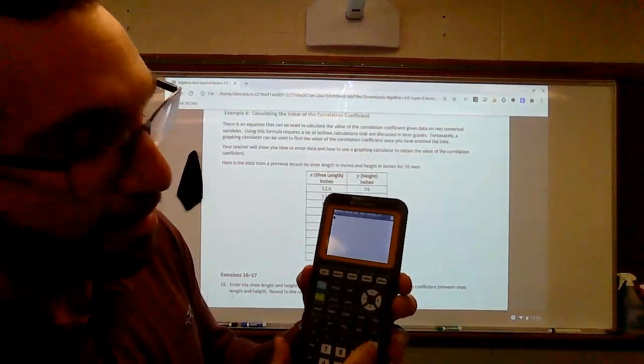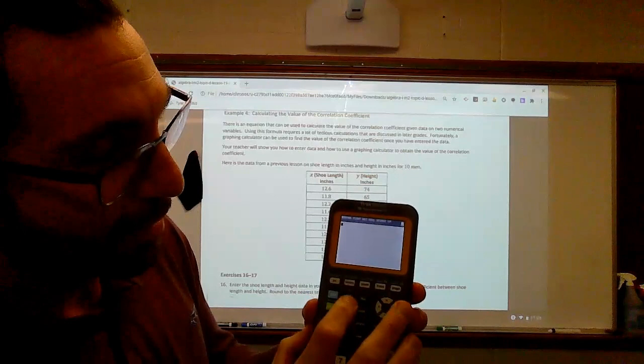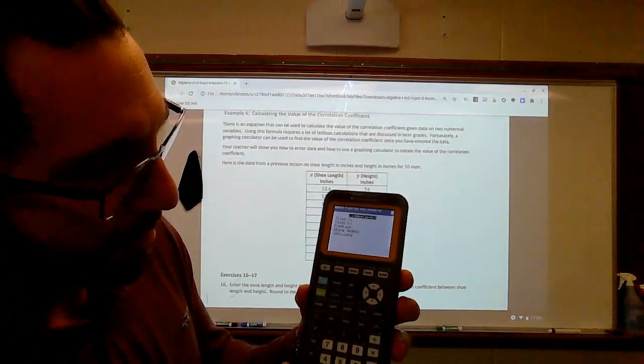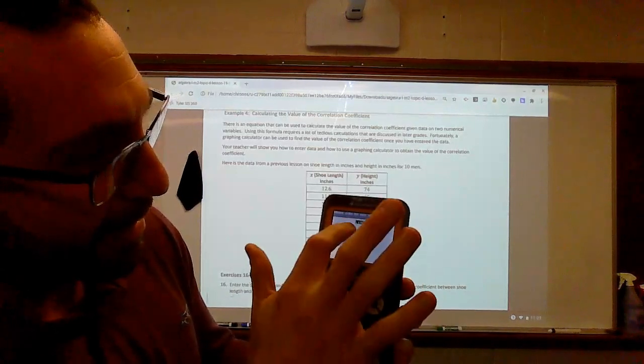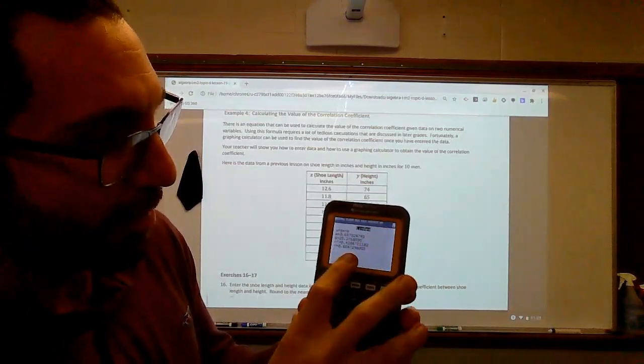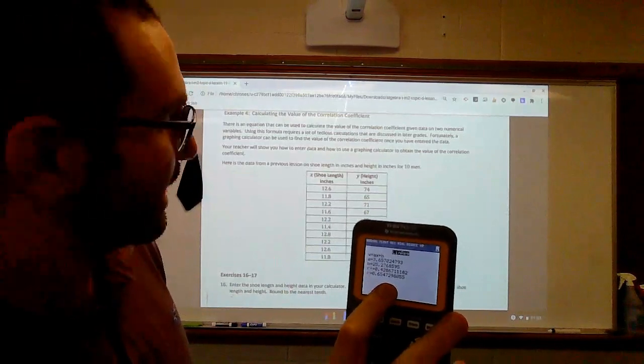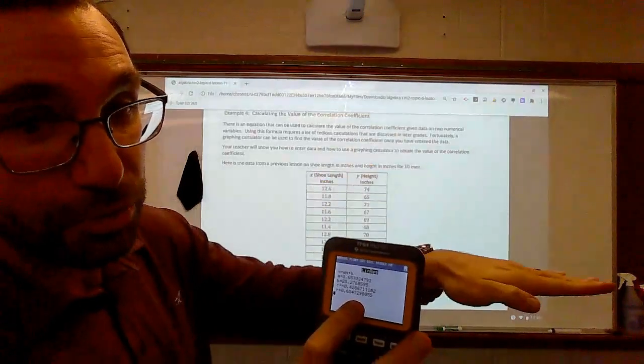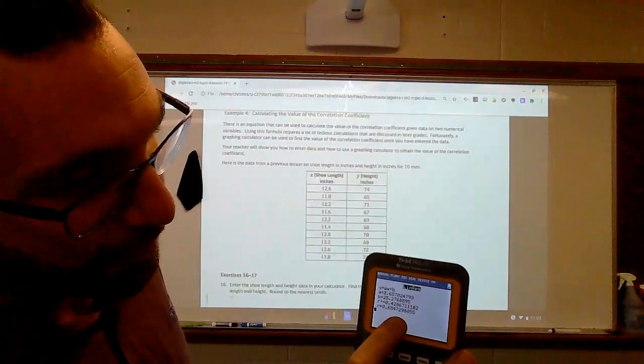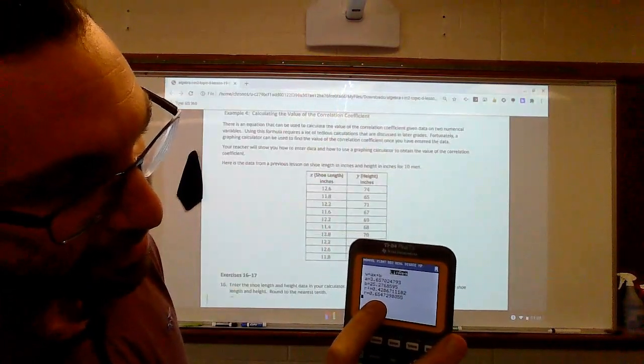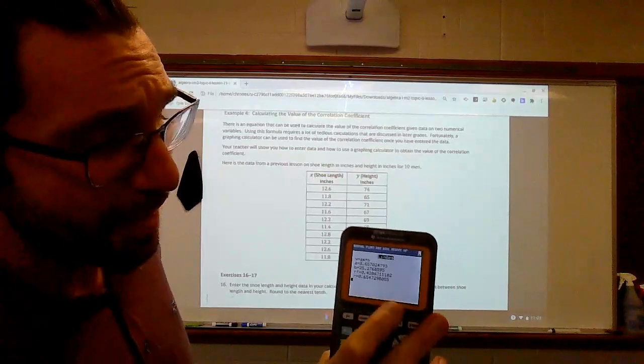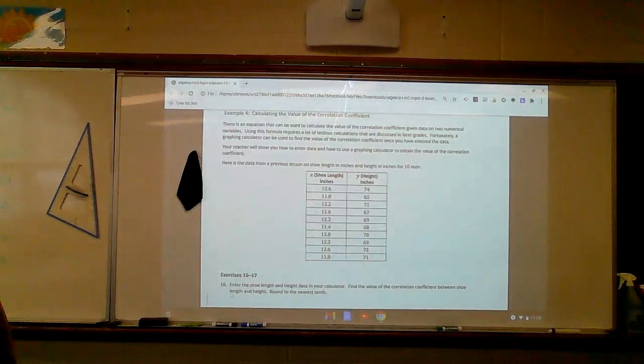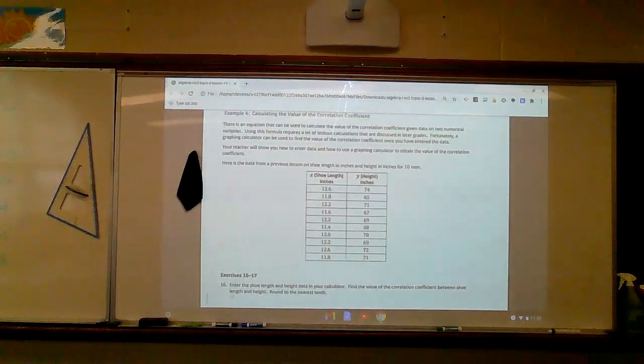I'm going to press Enter, and it says Done. We need to make sure we do that because now when I go to stat and I calculate, and I'm going to go to my linear regulate, I press Enter. It gives me not only my numbers but my R value. It's saying that the correlation coefficient for the shoe sizes, as my shoes are bigger, my height's taller, it's saying that it's about 0.65. 0.65 is close-ish to 1. It's not a perfect one, but it's close to 1.